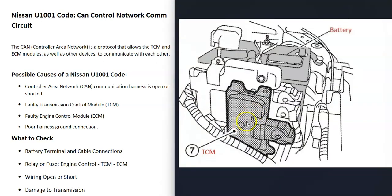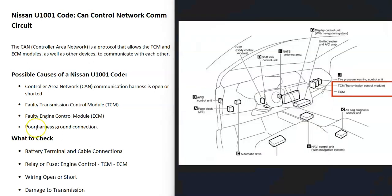It's going to vary on where these control modules are located. For example, on the 2010 Nissan the transmission control module is right in front of the battery. On a 2005 Nissan Murano, the transmission control module and the ECM are located on the passenger side up behind the glove box.